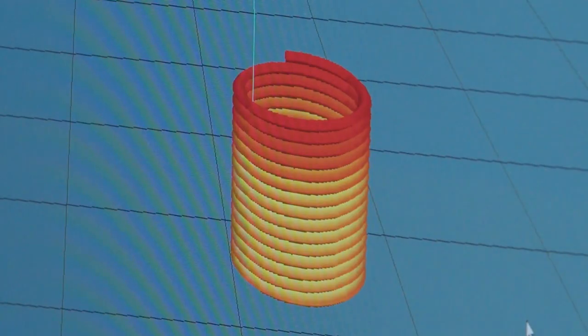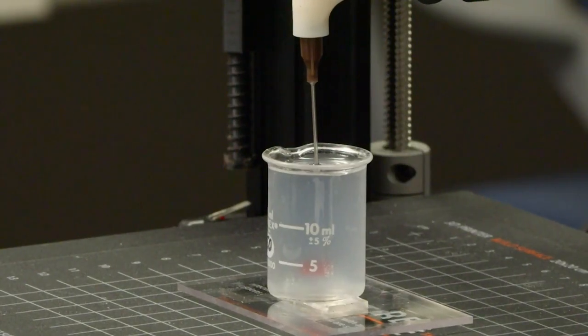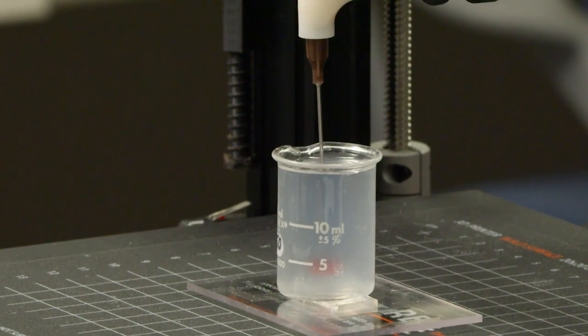The real-world application for these vascular bioprints would be for the vascular grafts for various vascular diseases like diabetes. Another application would be using these vascular structures as feeding tubes for printed tissues and organs.